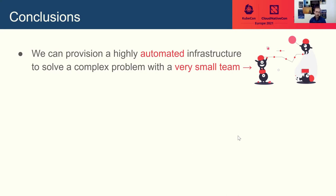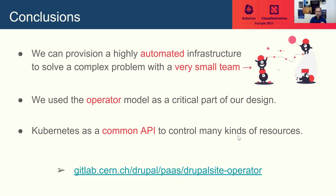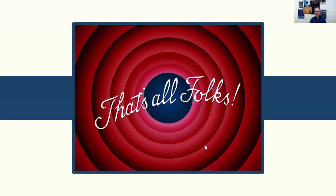We have used the operator model as a principal component of what we're doing. Because in the end, we can use Kubernetes as a common API to control not just containers, as was once thought, but many different kinds of resource. I believe this is the true core value of what Kubernetes is transforming to be today. With a final remark, I really invite you to visit our project at the link shown here and give us your thoughts and feedback. Thank you very much — I hope this was pleasurable.